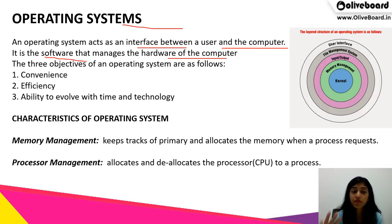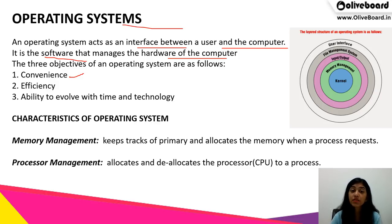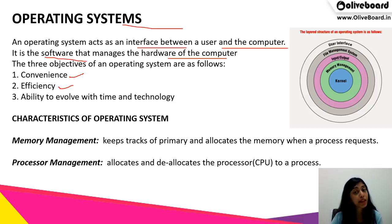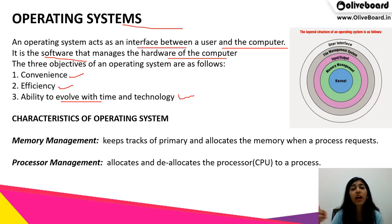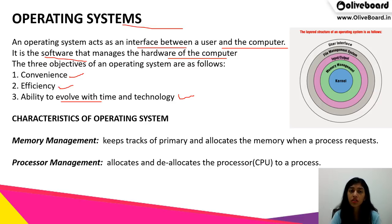There are three objectives of an operating system. First is convenience — it should be convenient for the user to use the computer, which the operating system makes possible. Second is efficiency — making sure there is minimal or no error. Third is the ability to evolve with time and technology, since technology is improving every day and the operating system has to evolve over time.